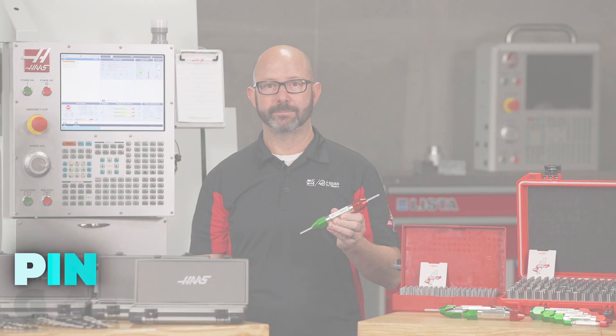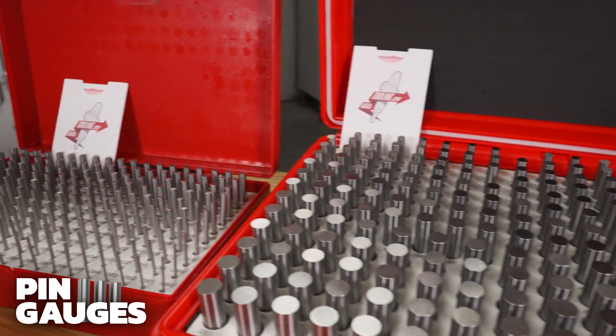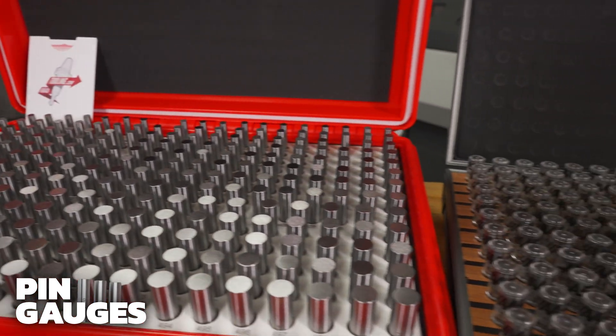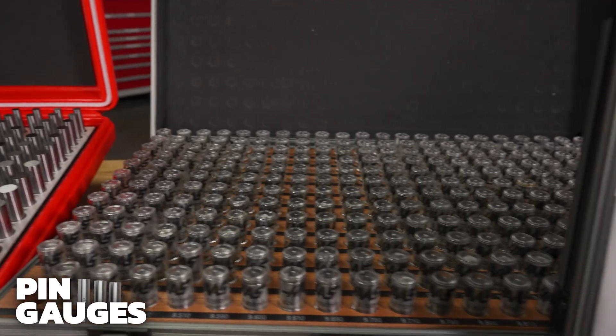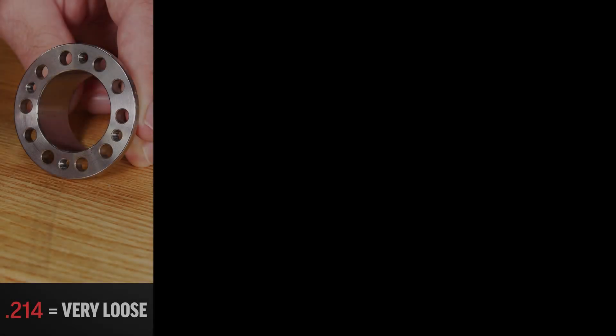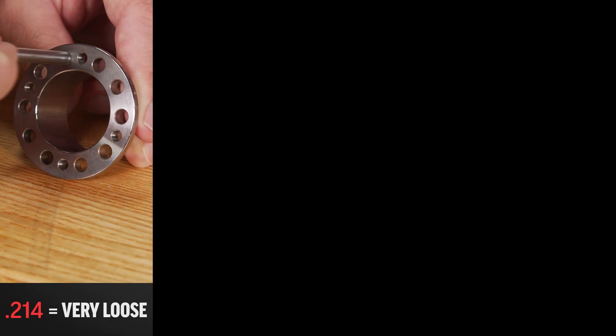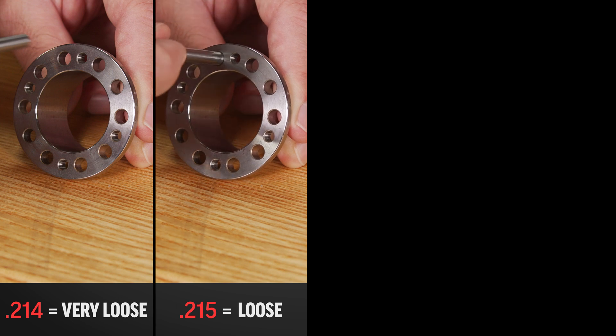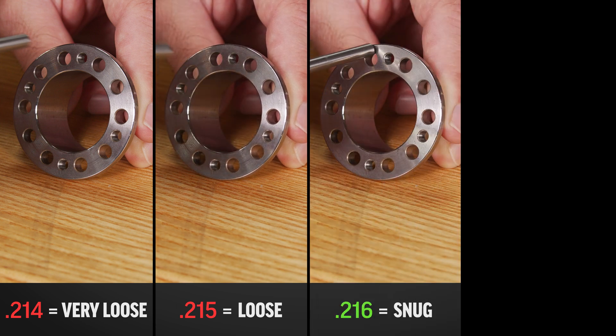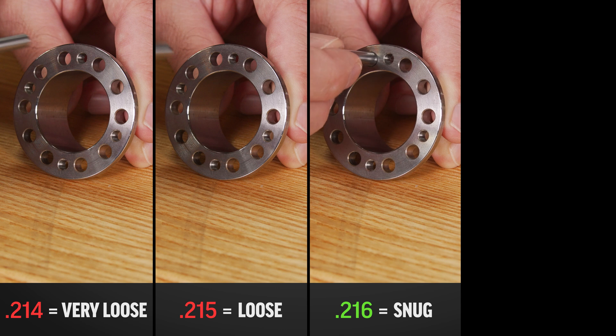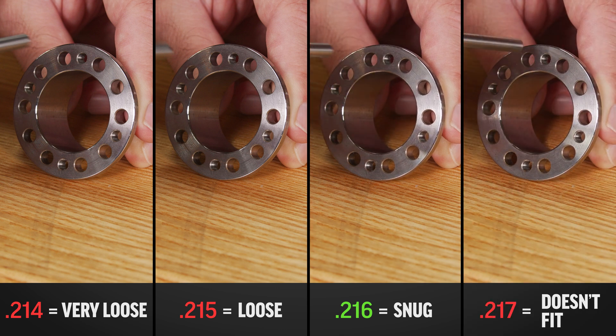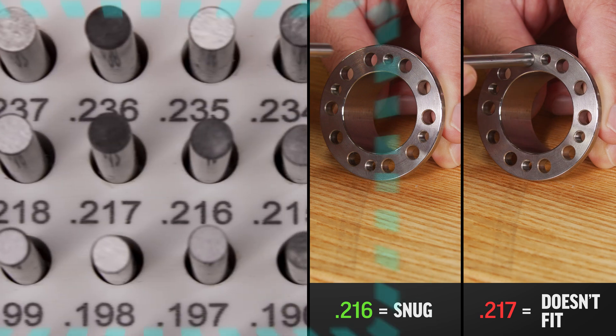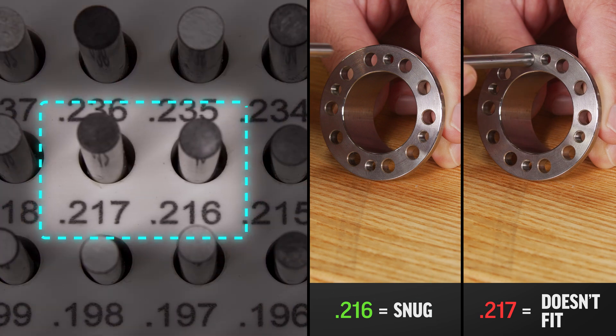Let's start here. These are pin gauges, also known as plug gauges or even go, no go pins. If we want to know what size a hole is, we test fit pins until we find a pin that fits that is next to a pin that doesn't fit. We now know for certain that our actual hole size is somewhere between these two pin diameters.